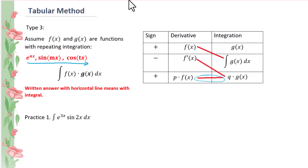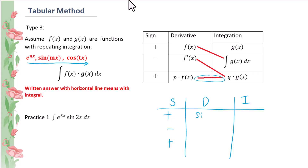Practice 1. Let's draw the table: sin, derivative, integral. Positive, negative, positive. The derivative column will start with sin 2x. The integration column starts with e to the power of 3x.